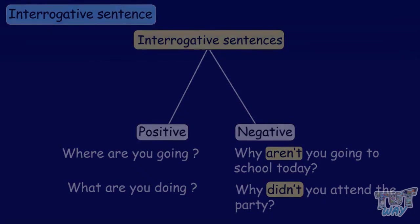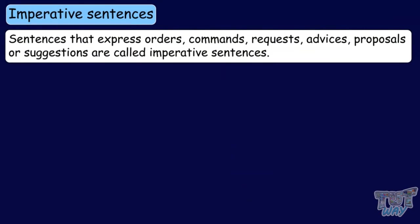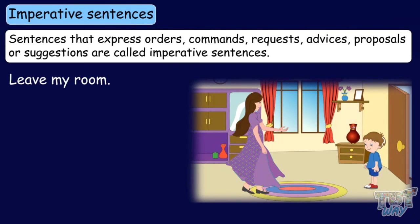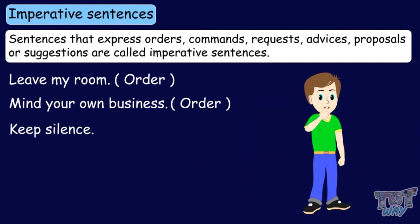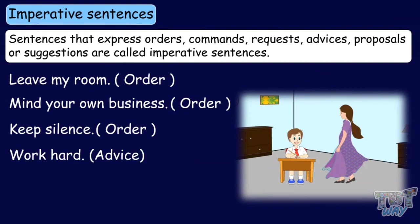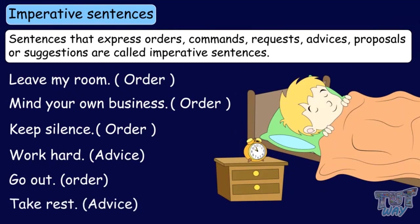Now let's learn what imperative sentences are. Sentences that express orders, commands, requests, advices, proposals, or suggestions are called imperative sentences. Leave my room — that's an order. Mind your own business — also an order. Keep silent — an order. Work hard — advice. Go out — an order. Take rest — advice. These are some examples of orders and advices.